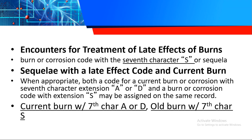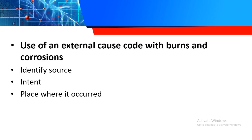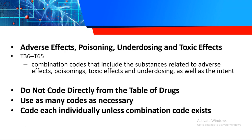For late effects of burns — seventh character S, sequela — if there is both a current burn and a sequela, code the current burn first followed by the sequela. A common example of late effects of burns is scarring. For the use of external cause codes with burns and corrosions, you need to identify the source, the cause, the intent — intentional or not — and where the burn happened: house, hotel, classroom, park, or other place of occurrence.